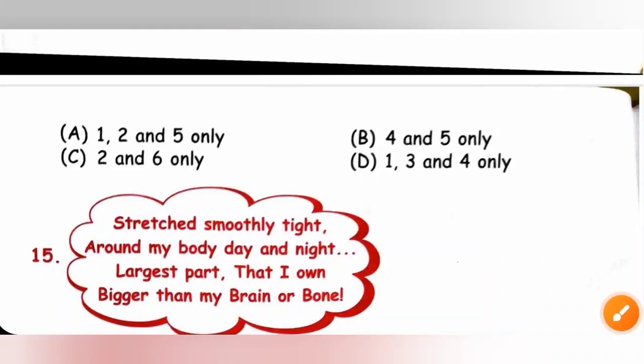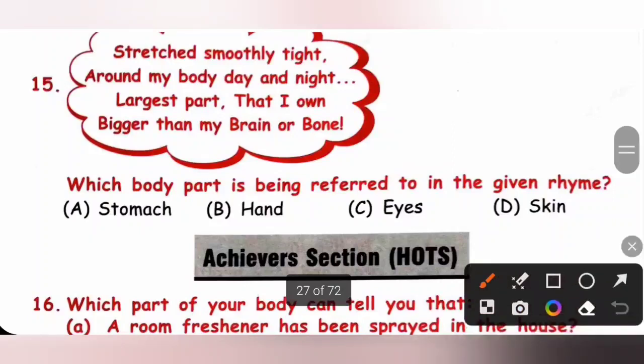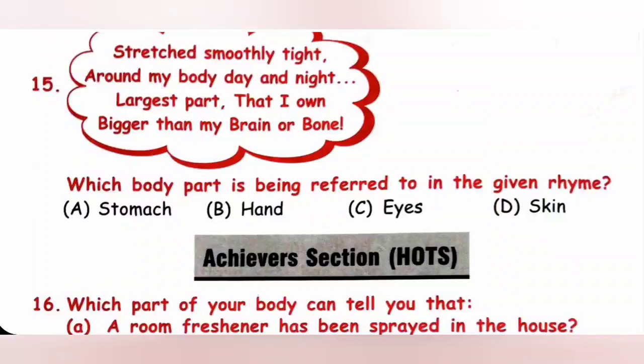Fifteenth. Stretched smoothly tight around my body day and night. Largest part that I own. Bigger than my brain or bone. Which body part is being referred to in the given rhyme? So, they are referring skin. Skin is stretched smoothly tight around our body day and night. It is the largest part. It is bigger than brain or bone. So, option D is the correct answer.